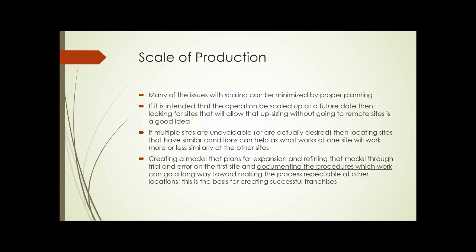If multiple sites are unavoidable or even desired, then locating sites that have similar growing conditions can help. Because what works at one site is going to work more or less similarly at the other sites. If one site is full sun with excellent soil and your second site is partially shaded with poor soil, what works at the first site isn't necessarily going to work at the second. If you can find similar sites, it's easier to transplant your operation from one area to another.